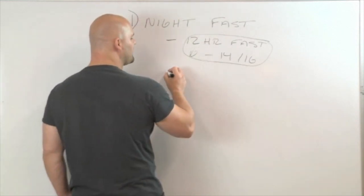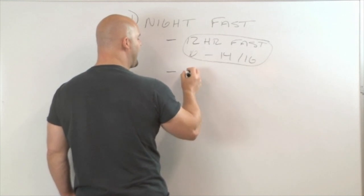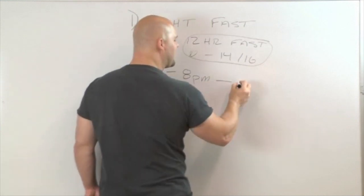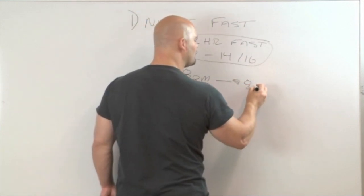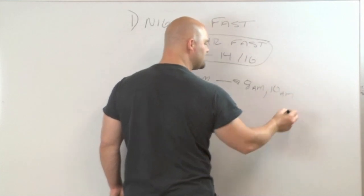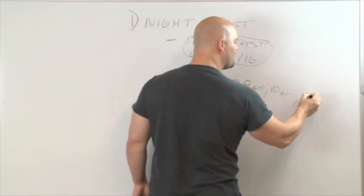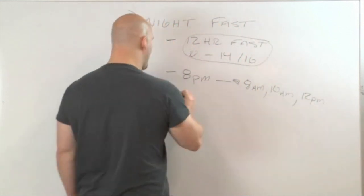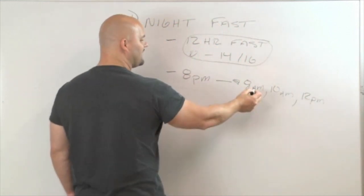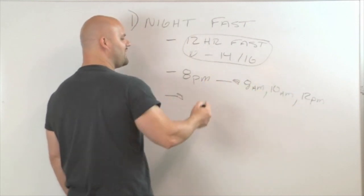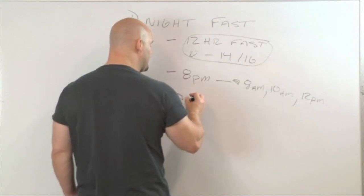So this fast will normally occur where most people will have their last meal by 8 p.m. and then they will not eat again until 8 a.m., which would be a 12 hour fast, 10 a.m., which would be a 14 hour fast, or 12 p.m., which would be a 16 hour fast. And then they consume all their meals between 8 a.m. and 8 p.m., or 10 a.m. and 8 p.m., or 12 p.m. and 8 p.m.